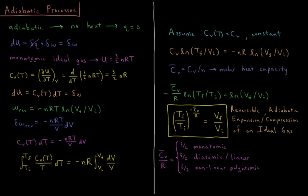As mentioned in the previous video, for a monatomic ideal gas — a relationship derived from statistical mechanics — the internal energy is equal to 3/2 nRT: the number of moles of gas times the gas constant times temperature. That comes from the translational energy of the monatomic ideal gas.